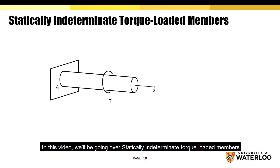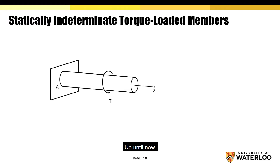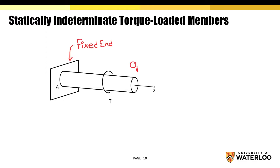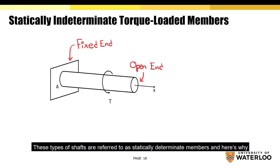In this video, we'll be going over statically indeterminate torque loaded members. Up until now, we've only dealt with torsionally induced circular shafts with one fixed end and one open end. These types of shafts are referred to as statically determined members, and here's why.